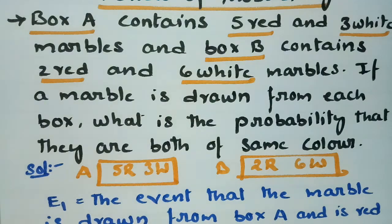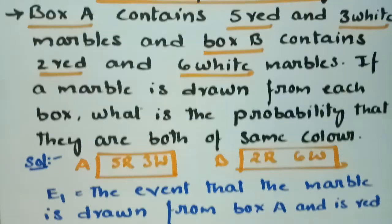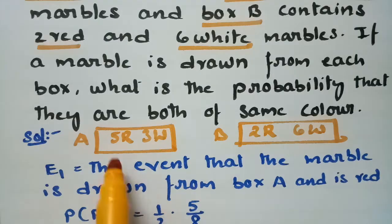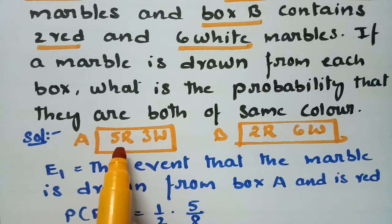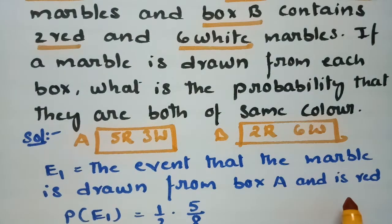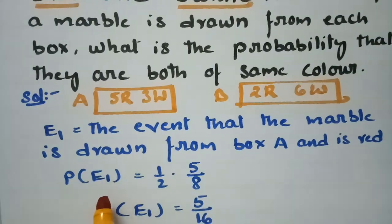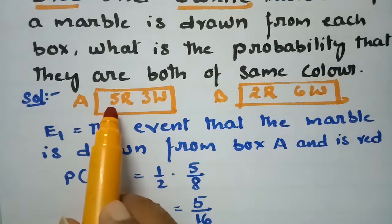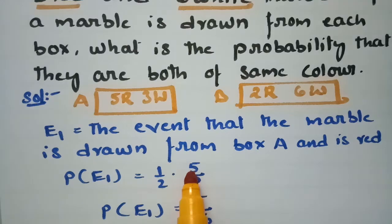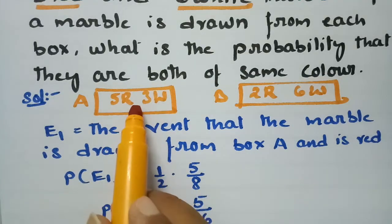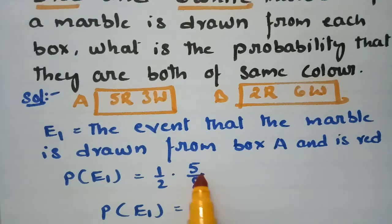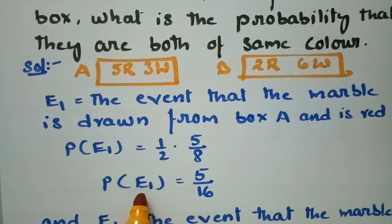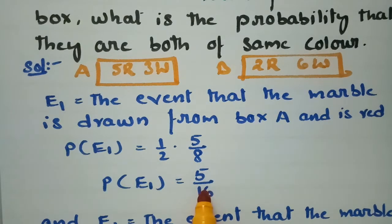First, define event E1: the event that the marble drawn from box A is red. The probability of E1 is half — the chance of choosing box A — multiplied by 5C1 over 8C1, which is 5 over 8. So P(E1) = 1/2 × 5/8 = 5/16.